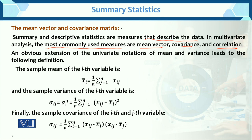Mean vector: just like we find the mean in univariate, now we have to find the mean vector. The sample mean of the i-th variable — what happens in univariate is sum of x_i over n. But here for the i-th variable, x-bar_i equals 1 over n, sum j from 1 to n of x_{ij}.